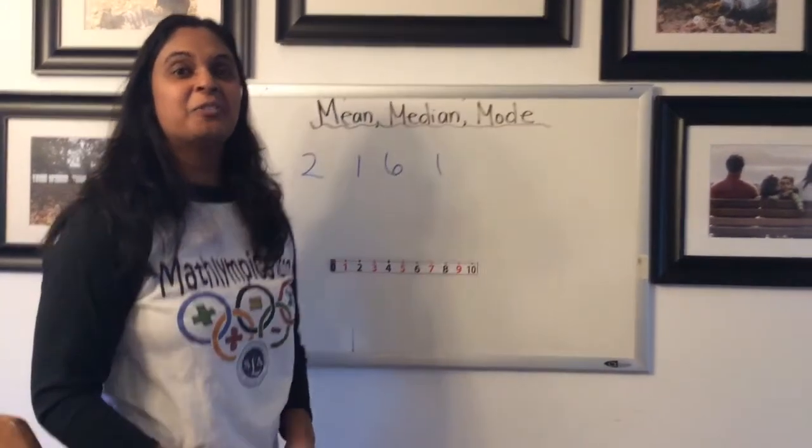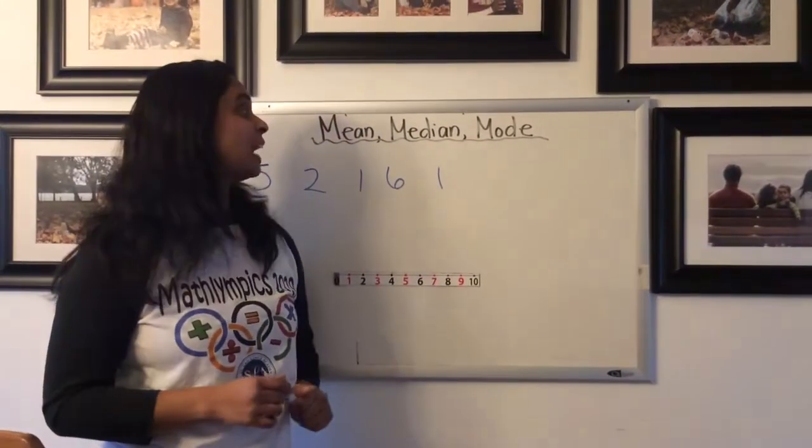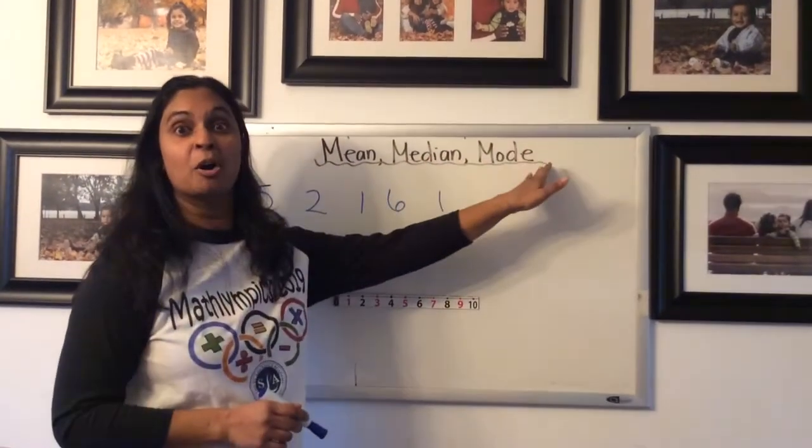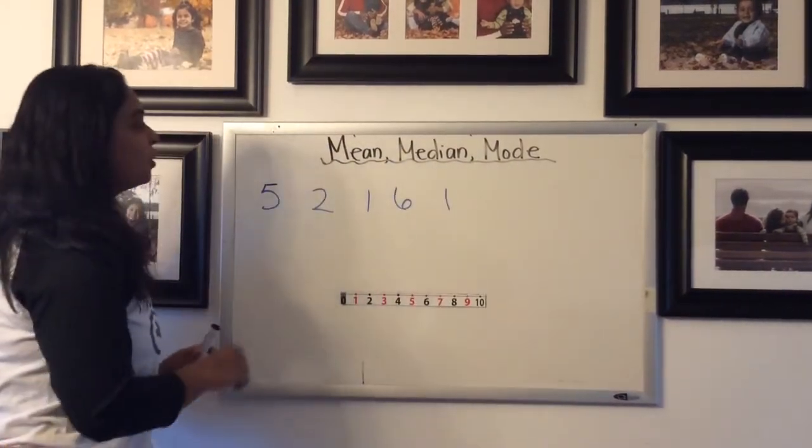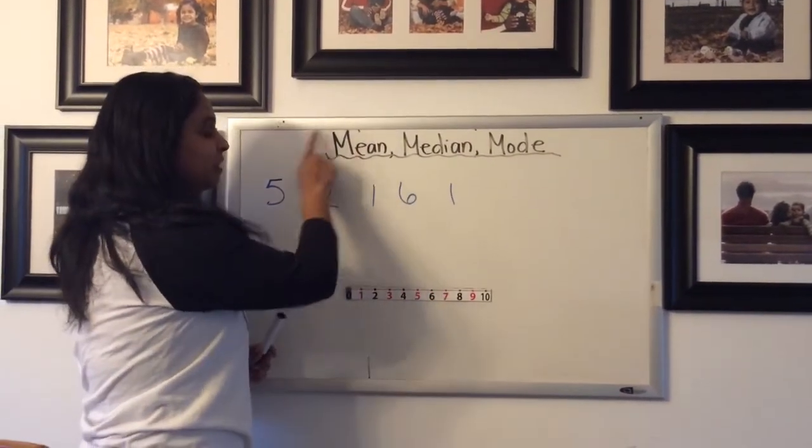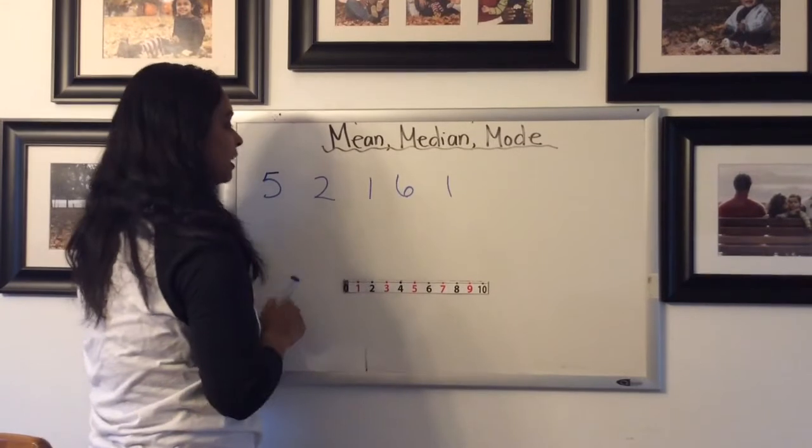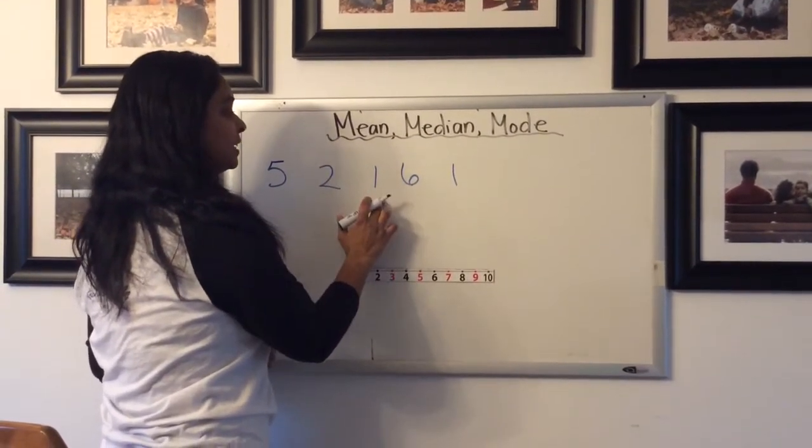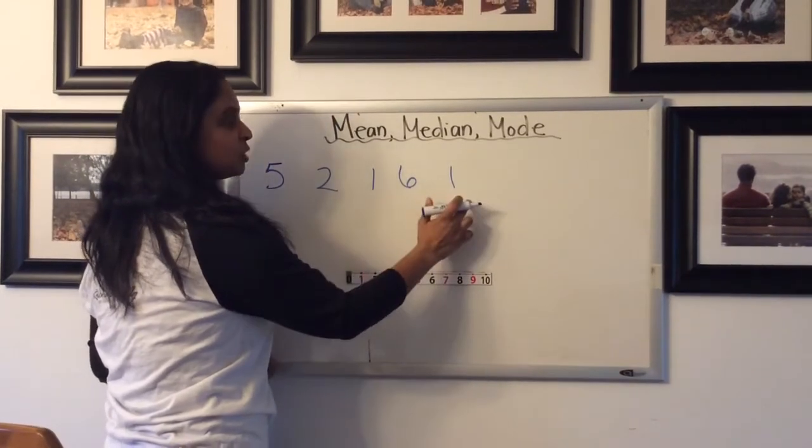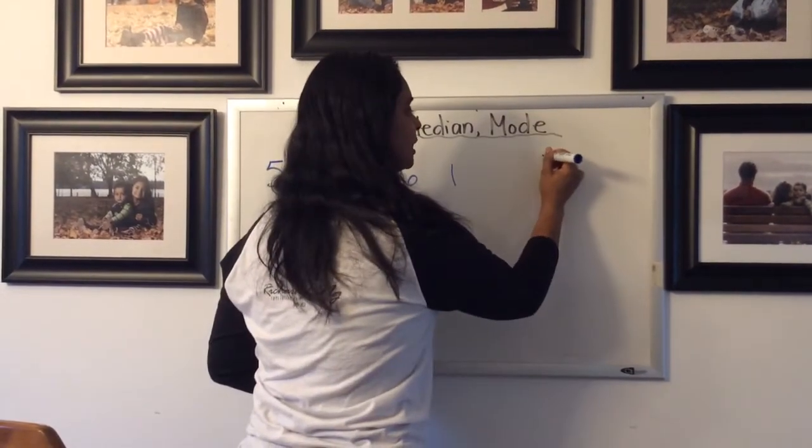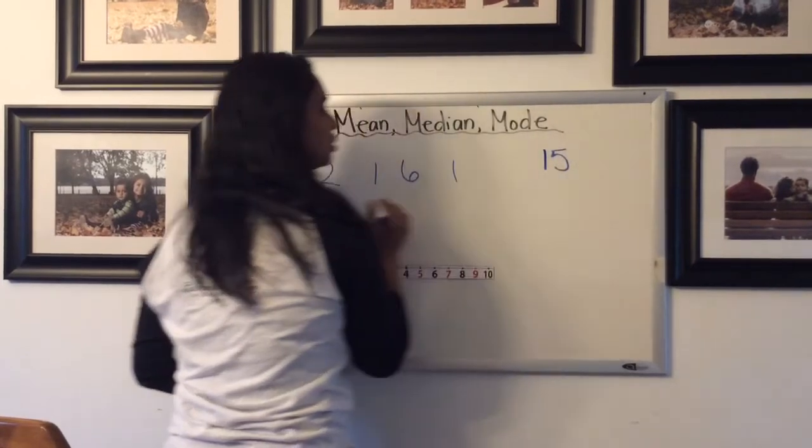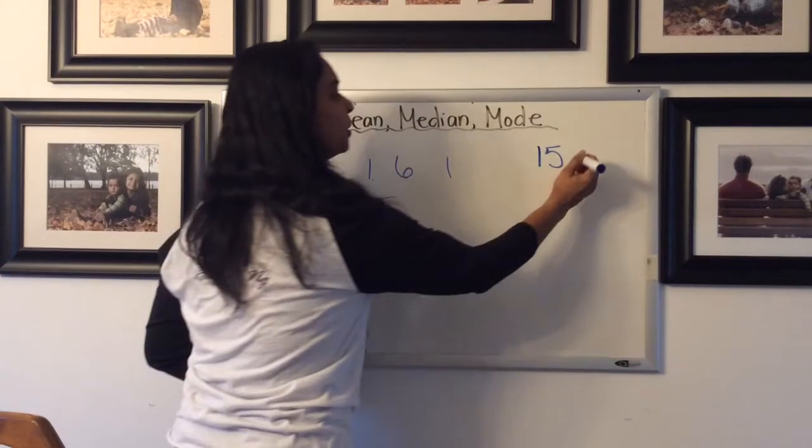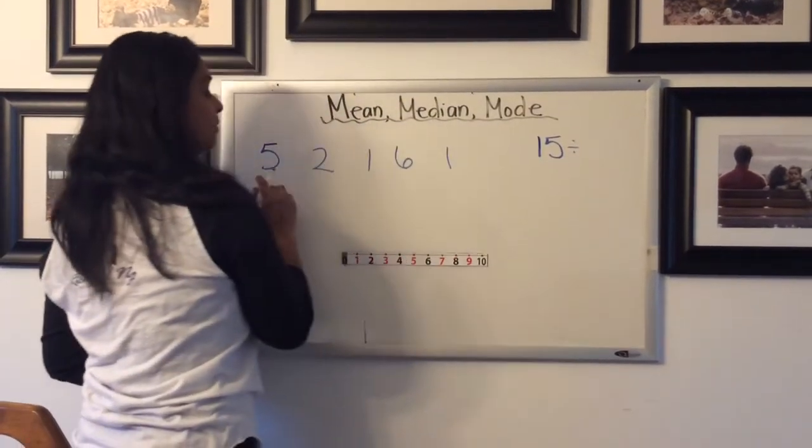Hi everyone. So you've done a little bit of work with the mean now and we're going to talk about the median and the mode of a set of data now. Remember that the mean is the average, so adding up all your data values. So we can do it for this one: 5 plus 2 is 7, plus 1 is 8, plus 6 is 14, plus 1 is 15. So 15 is the total when we add up all our data values, that's the sum of our data values. And then we know we have to divide by the number of data values.